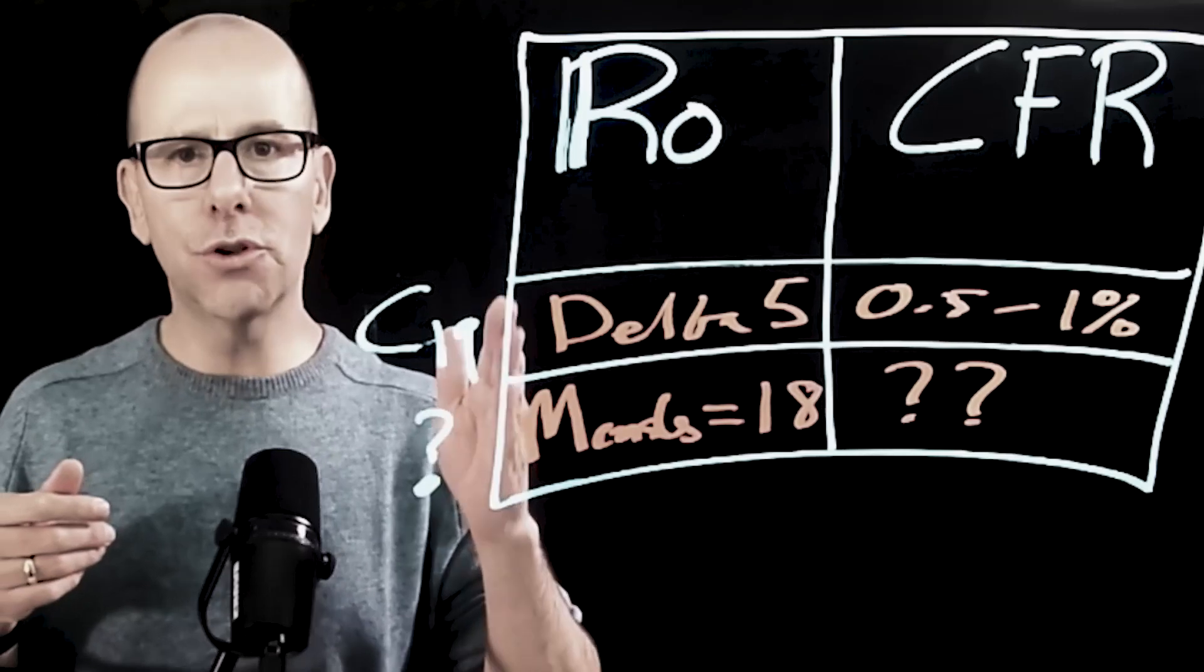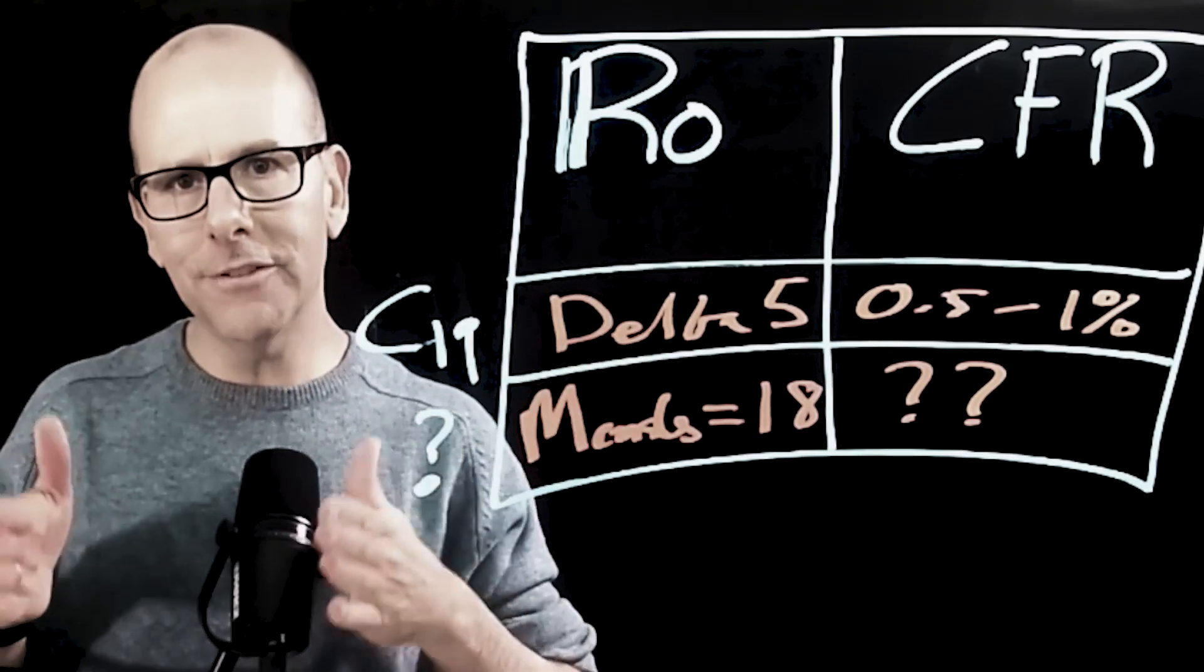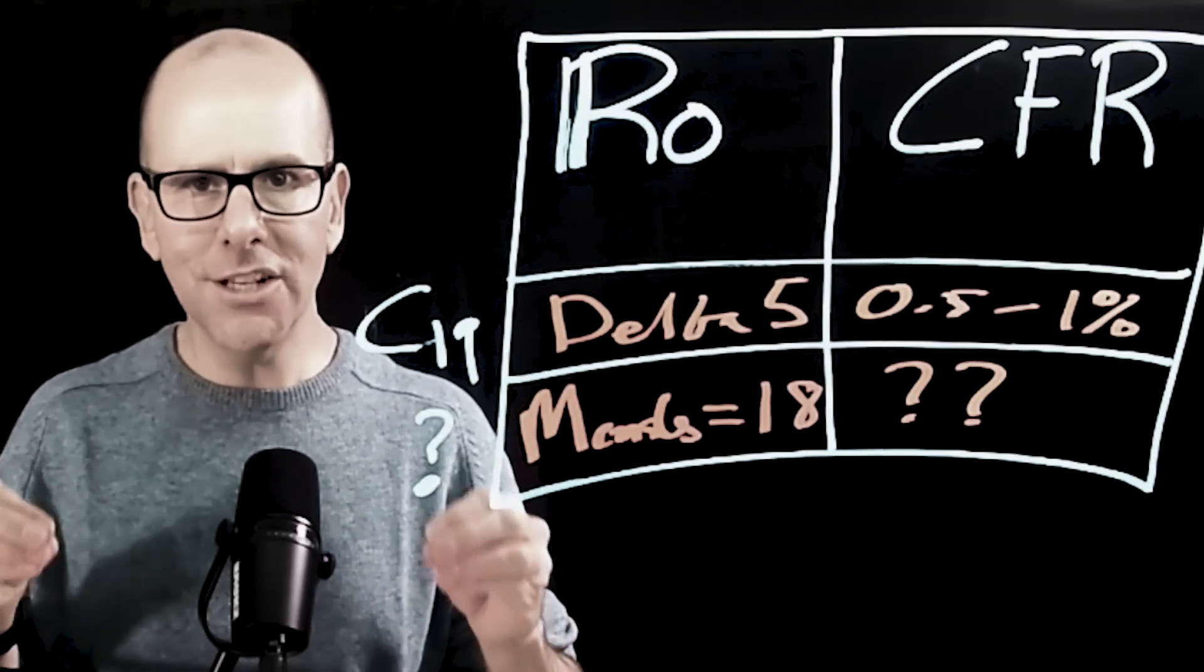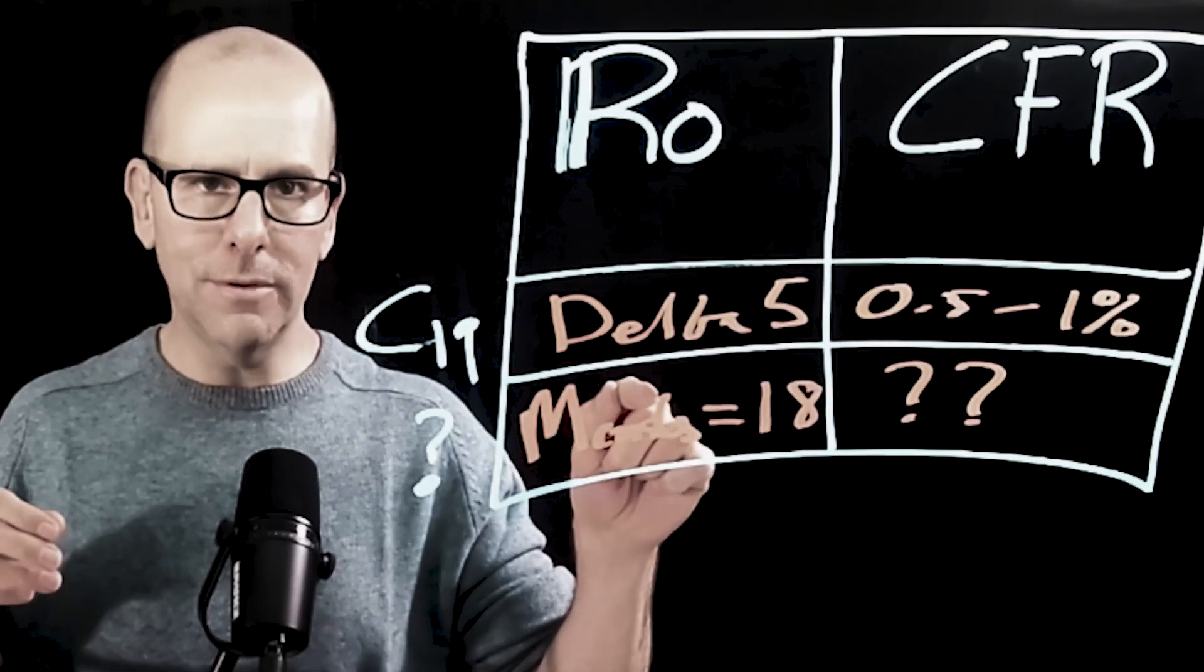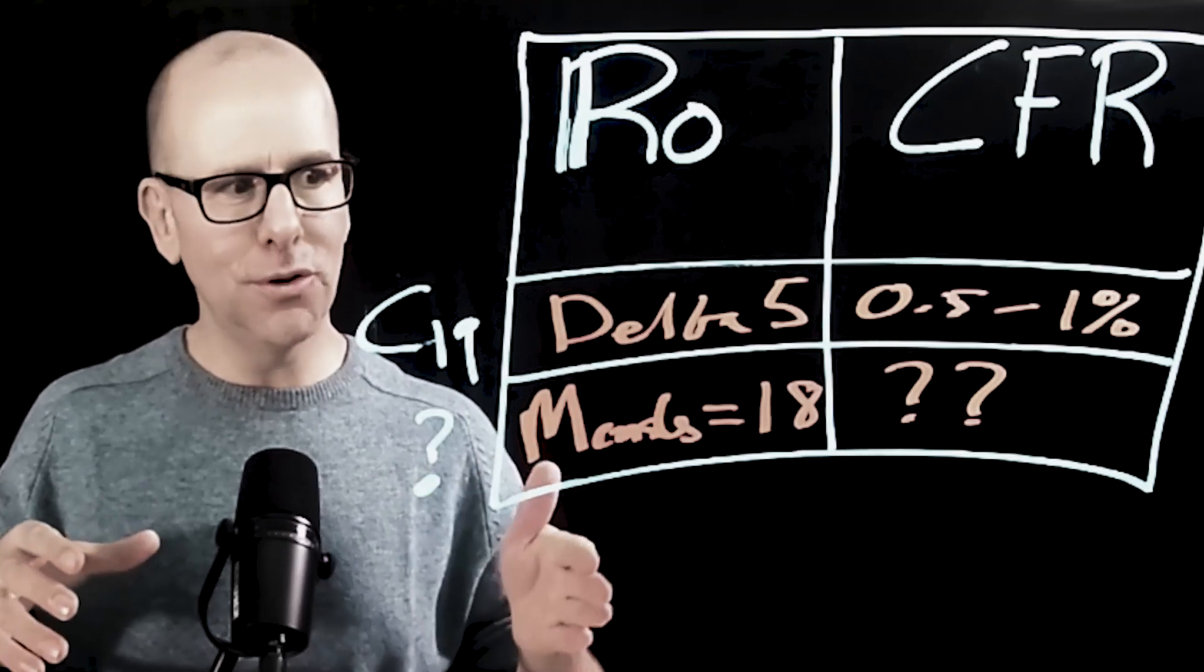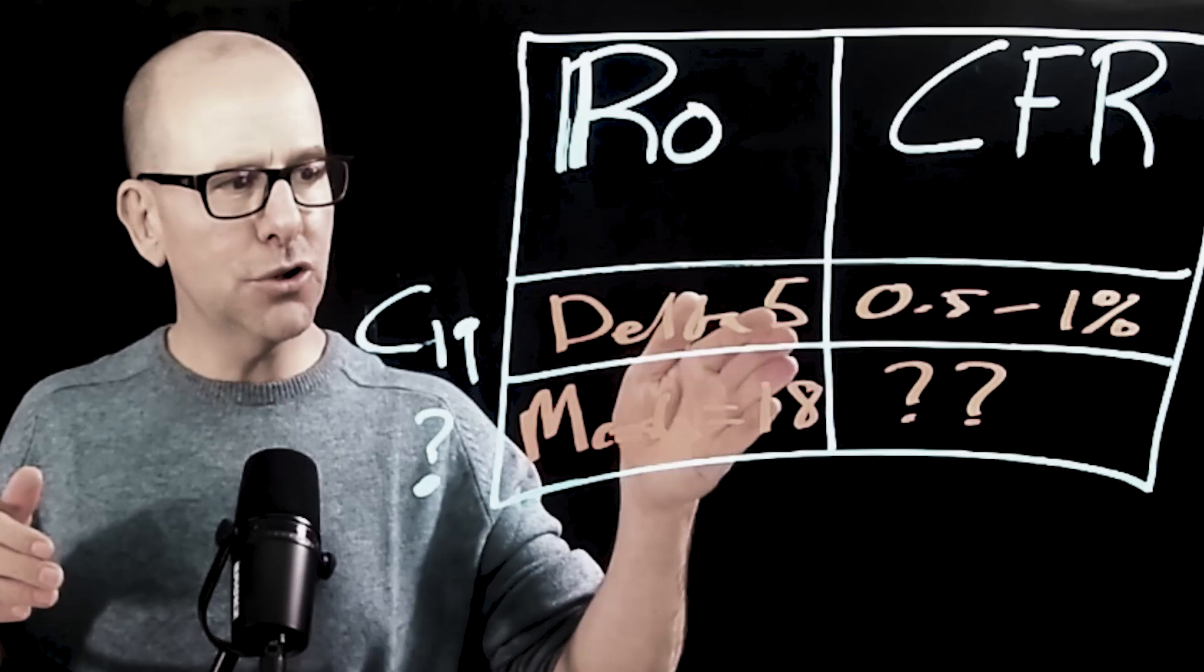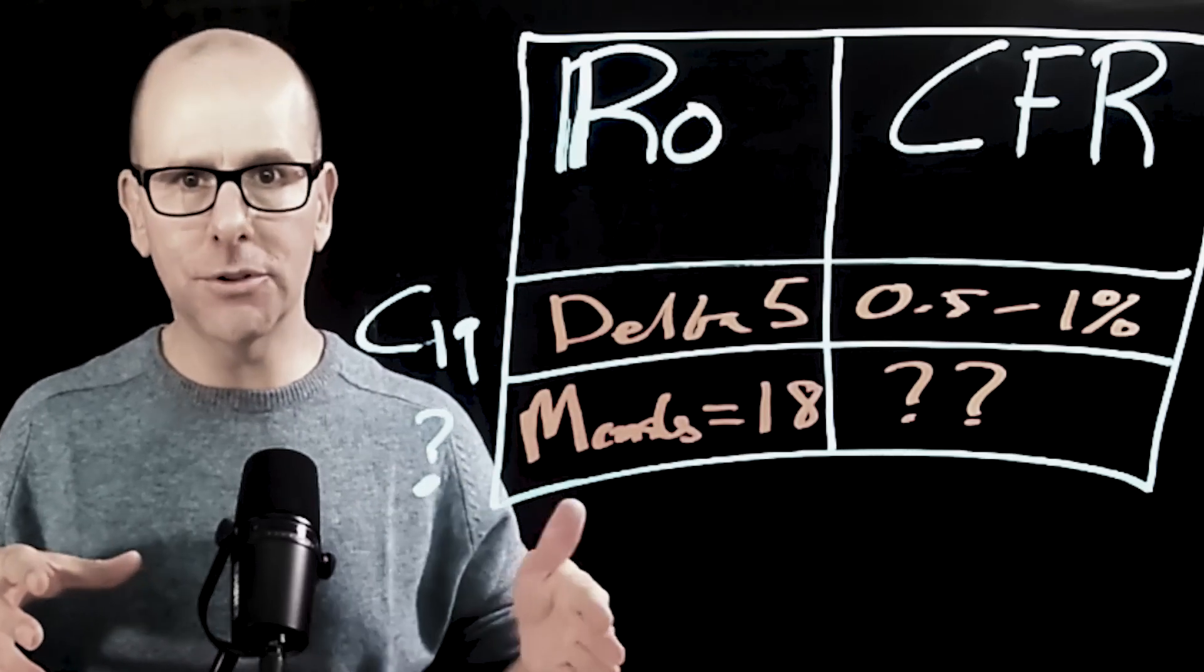So when the virus was two, when the R0 was two, right, two minus one over two means 50% of the population needed to be immune to get to herd immunity. A small change in R0, so just going up to five, five minus one is four over five means 80% of the population need to be immune in order to get to herd immunity with the Delta, with the R0 of five. So a small change in the R0 actually makes a huge difference in the extent to which we're able to combat the disease.